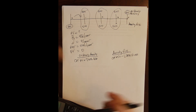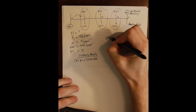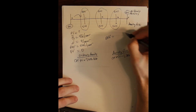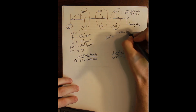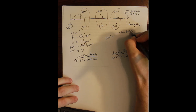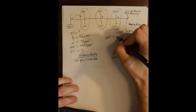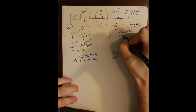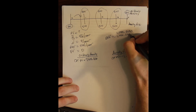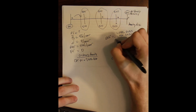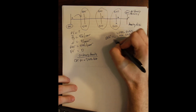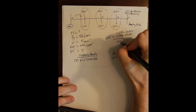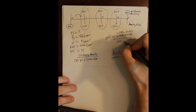We might also be interested in how much more valuable the annuity due is, which is simply the difference between the two present values. Subtracting $1,656.06 from $1,788.55, we find that the annuity due is worth more to us by $132.48.